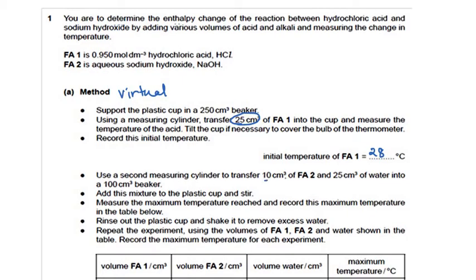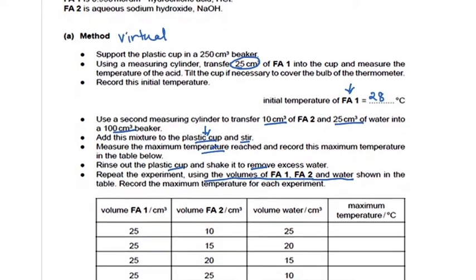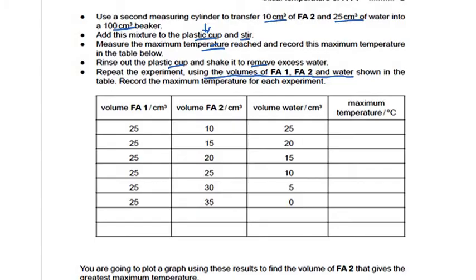The next few steps are important. It says to add 10 cm³ of FA2 and 25 cm³ of water in a 100 cm³ beaker, then add this mixture to the plastic cup in which we have taken FA1. Measure the maximum temperature reached and record it in the table. Rinse the plastic cup and shake it to remove excess water. Repeat the experiments using the volumes of FA1, FA2, and water shown in the table.